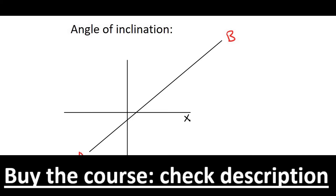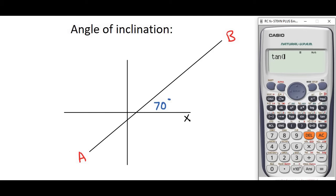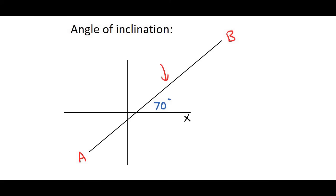You can also use the angle to work out the gradient. So what you would do now is you would simply say tan 70, and that would be 2.75. So what that means is that the gradient of this line would be 2.75.